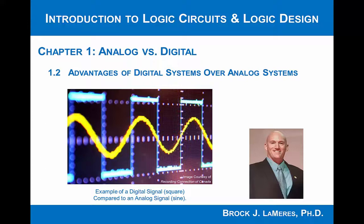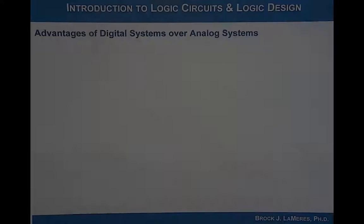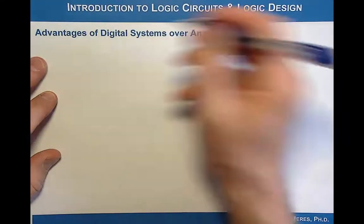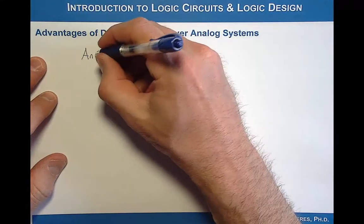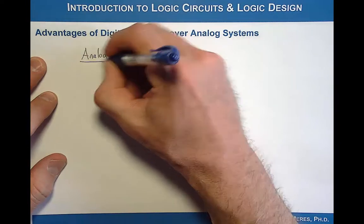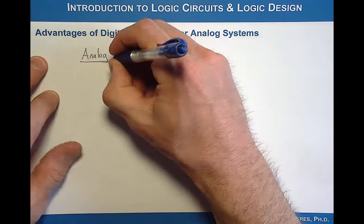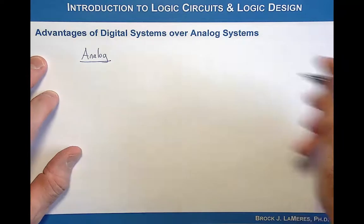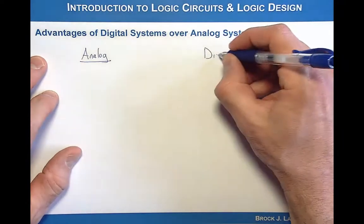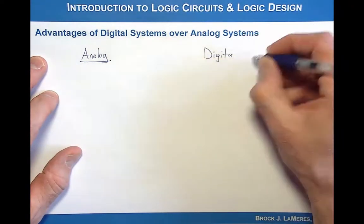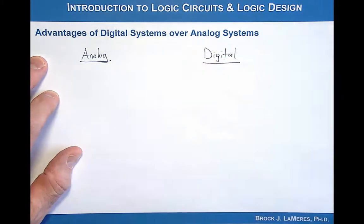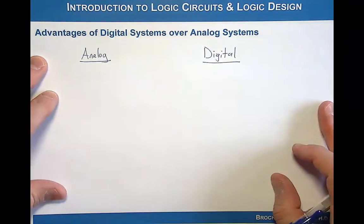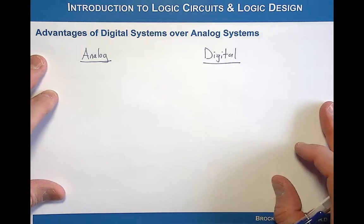In this video, we're going to look at some advantages of a digital system over an analog system. If you recall, we defined an analog system as a continuous, time-bearing, direct function of the information that it represented. A digital system, on the other hand, was a discrete representation of the information that was being represented.